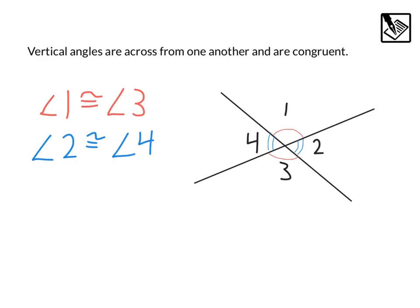When two lines cross each other, they form these little v's, and we call these vertical angles. The vertical angles are directly across from one another, and we know they're always congruent.